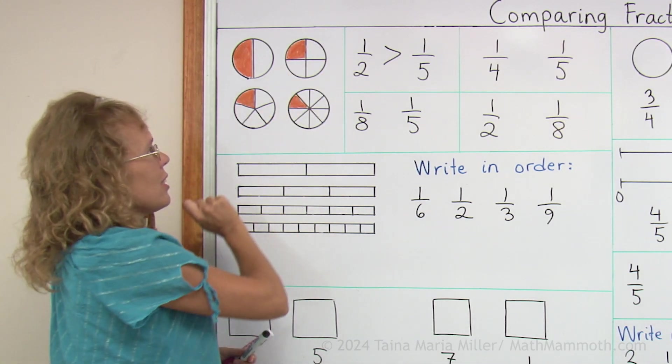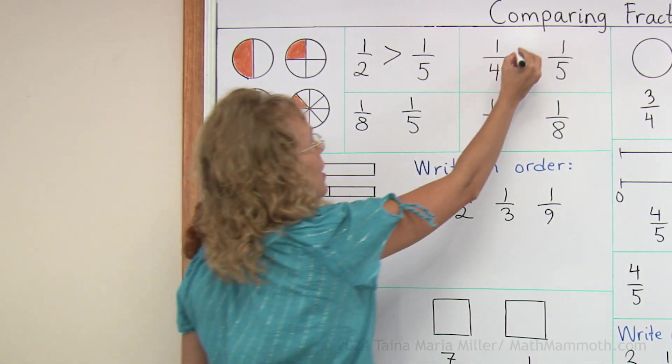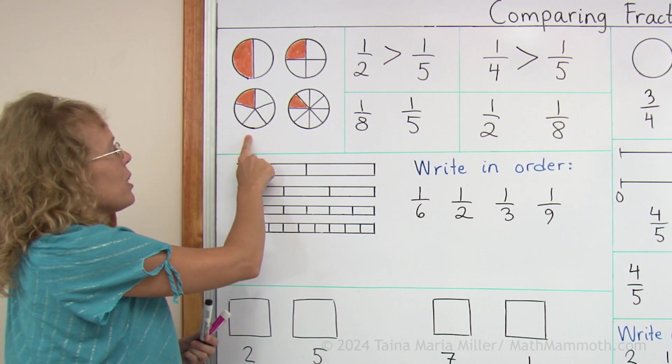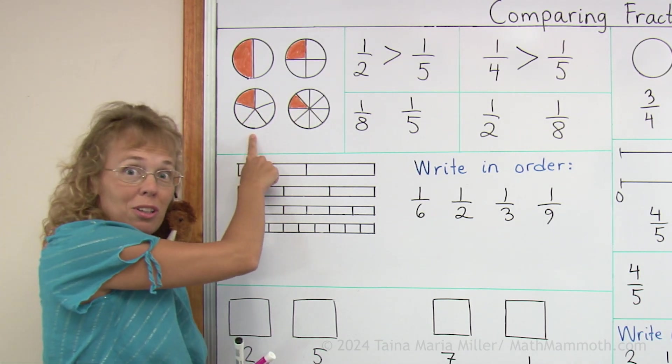One fourth is here, one fifth is here. One fifth is the smaller piece, because when you divide a pie into five pieces or four pieces, each piece here is smaller than here.